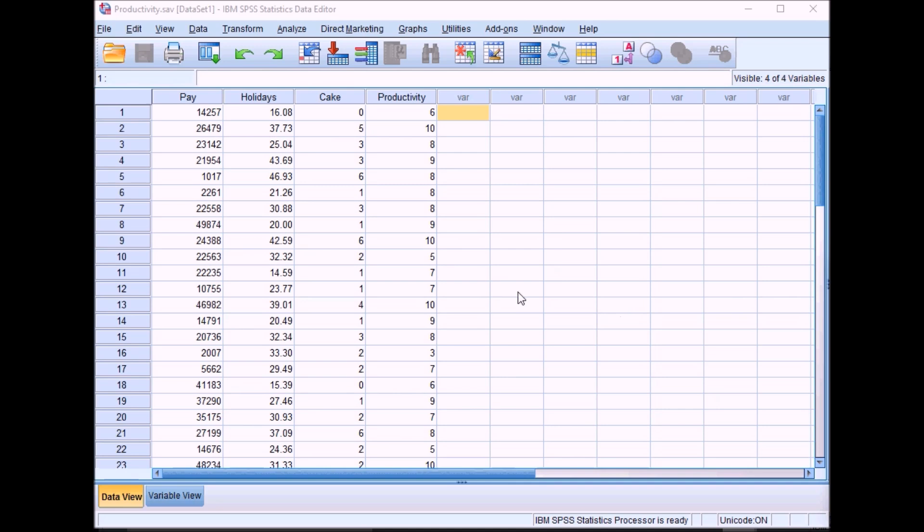I'll return to the dataset we used last week. This was data looking at whether someone's annual salary or pay is related to their productivity, and also whether the number of holidays they take was related to productivity. I've added a third variable in for this week. Imagine the researchers also measured the amount of free cake given out at work to see whether this would also have an effect on their productivity. In a multiple regression, we can look at the combined effects of these variables on productivity and then isolate the individual effects as well.